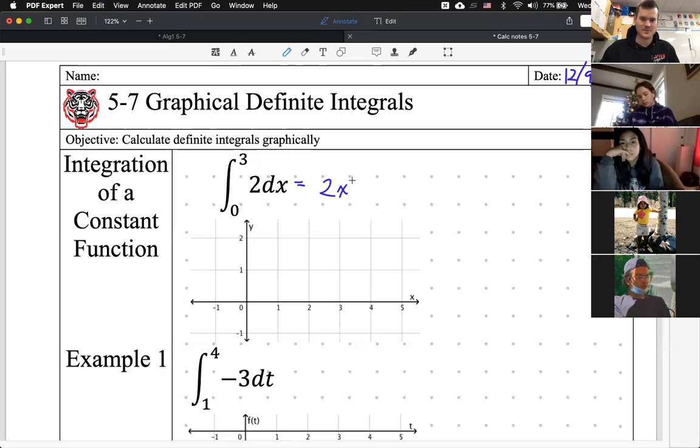And then we don't do plus C, Teflon, we do... That straight line thingy? Yeah, evaluation bar between 0 and 3. Very nice.